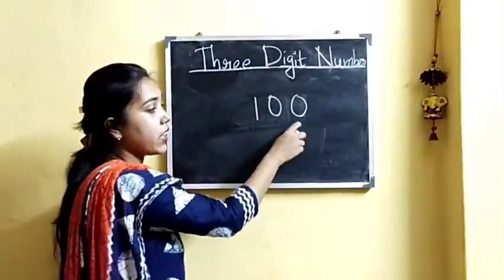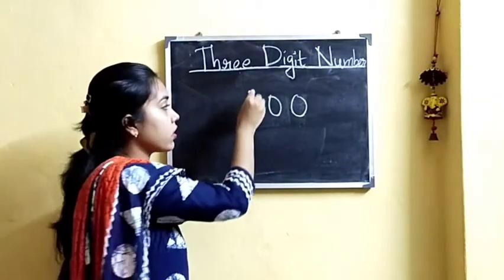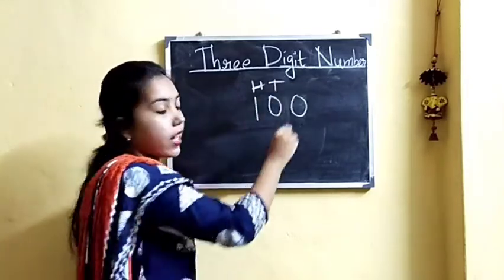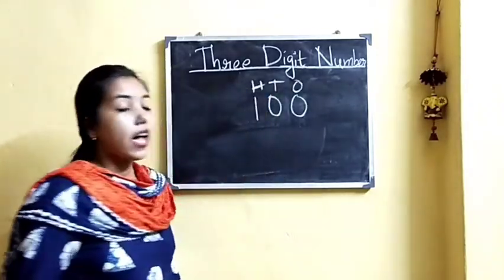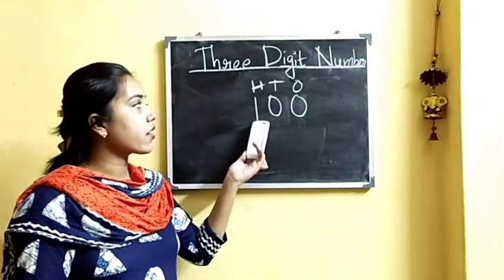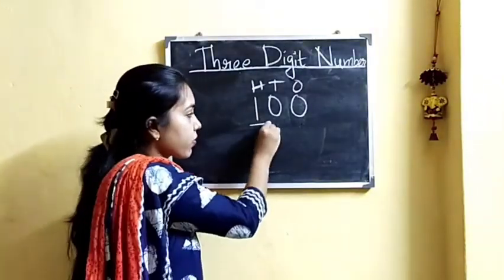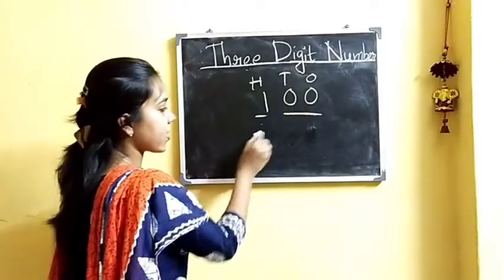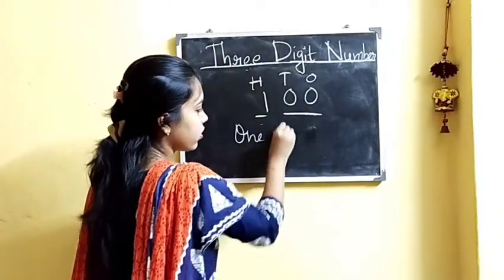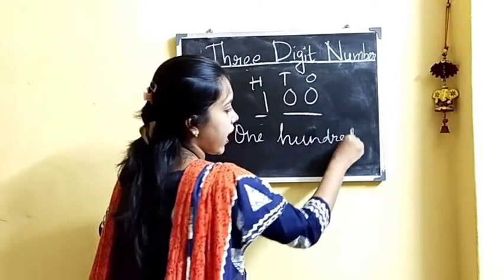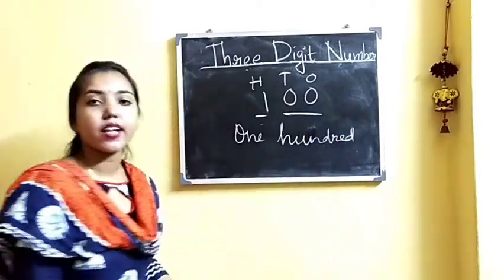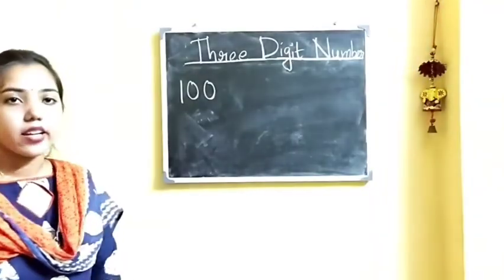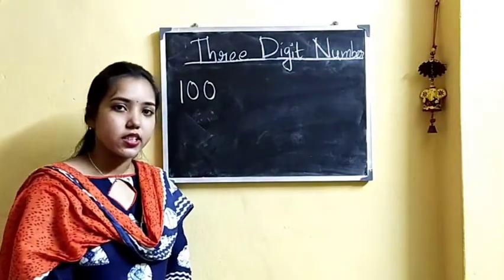So the third digit from the left is said to be at the 100s place. This is at 100s place, this is at 10s place, and this is at 1s place. To read a 3-digit number we will first read the 100s place, and then the 10s and 1s place together. It is read as 100 as there are no 10s and 1s.